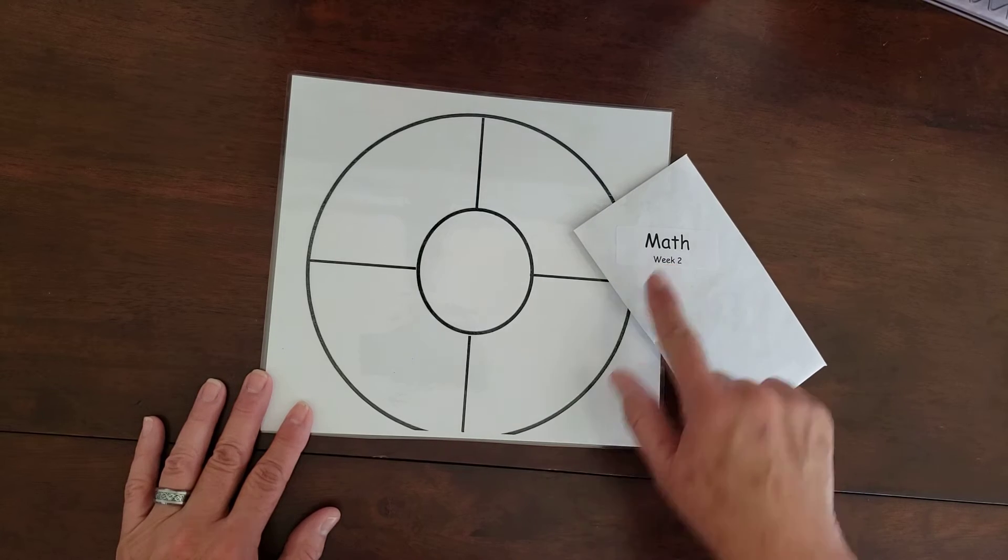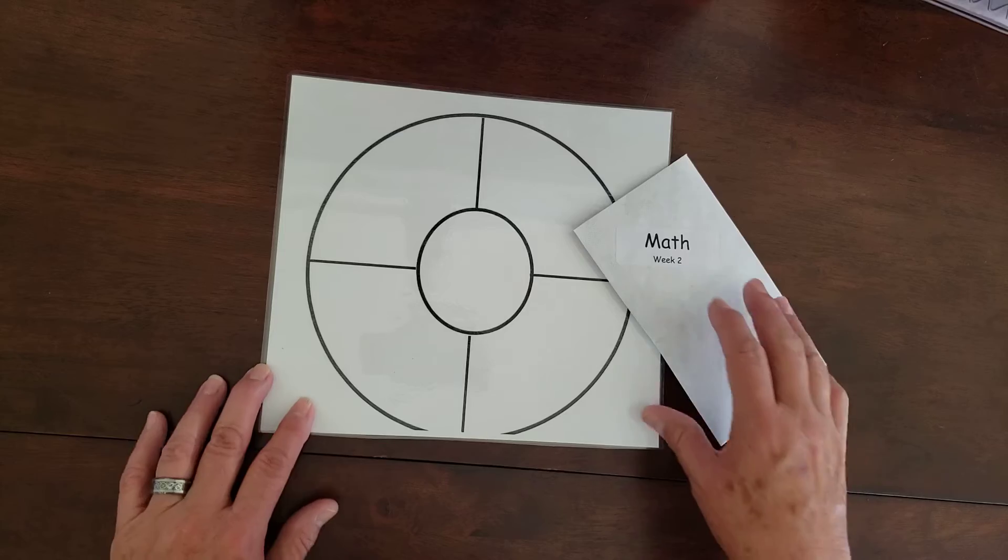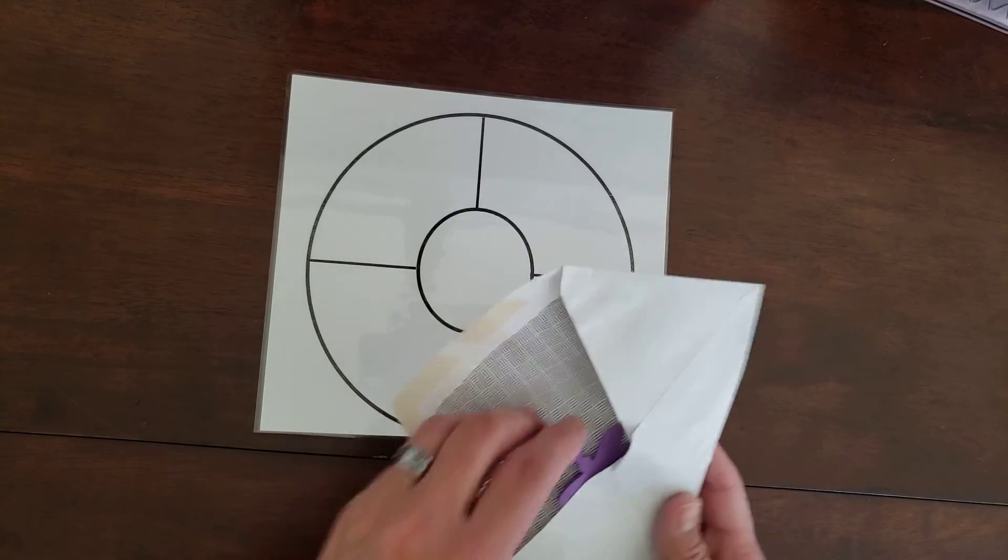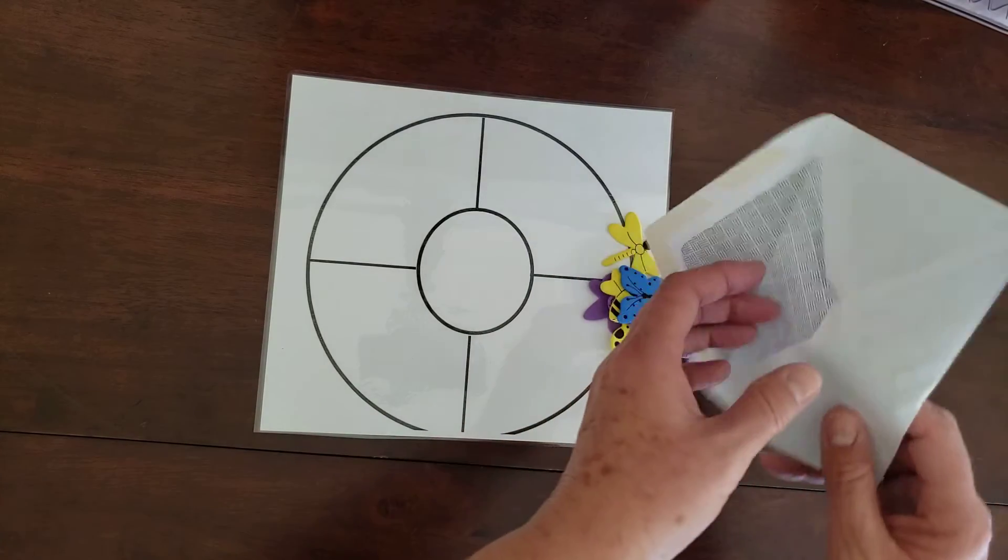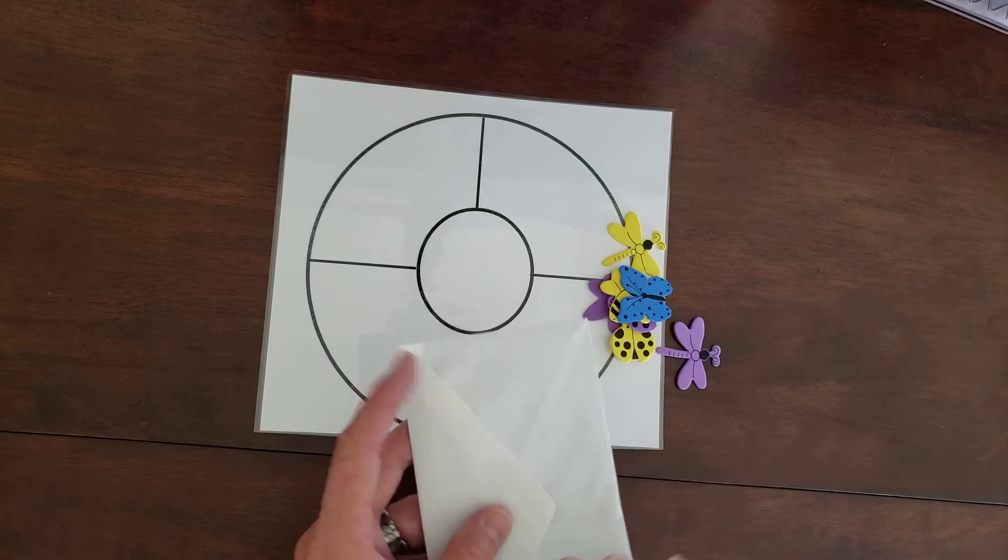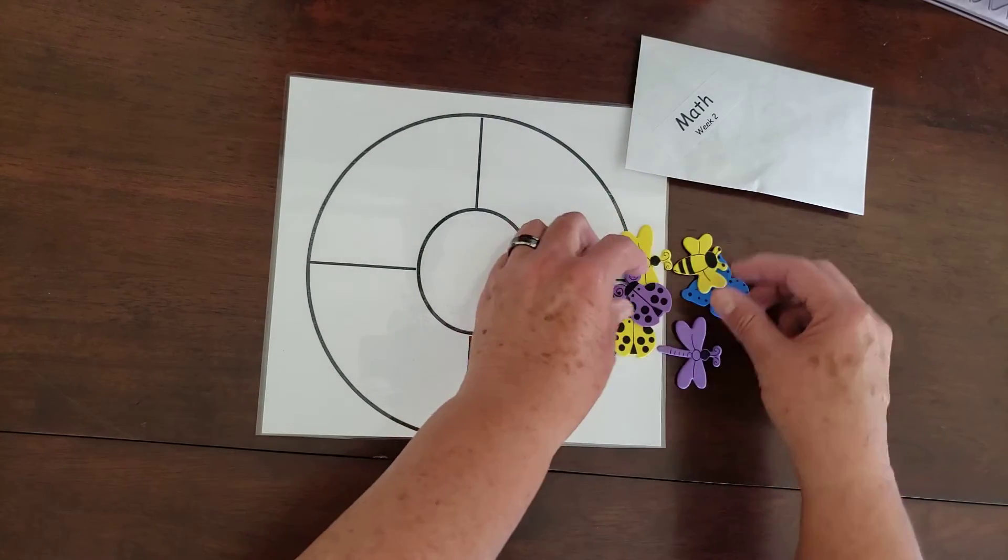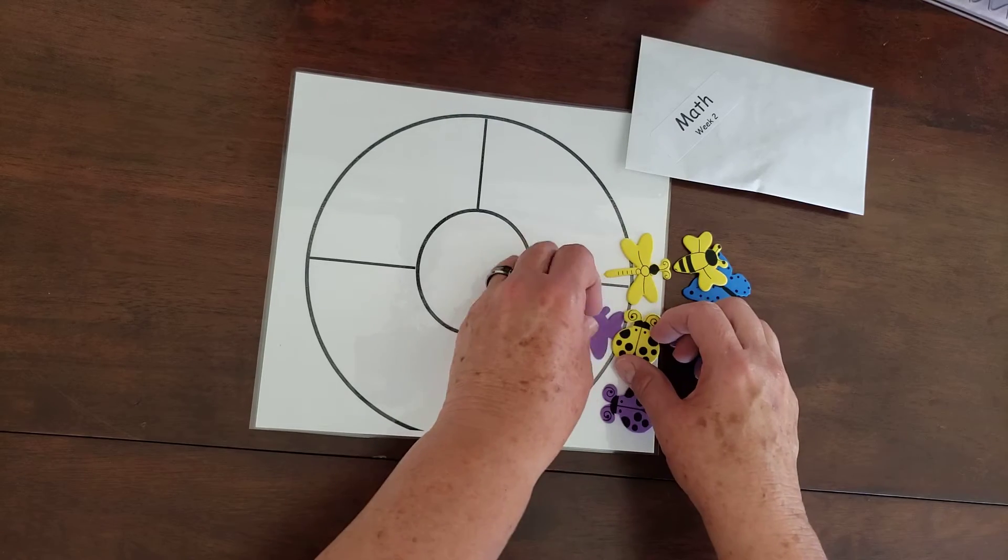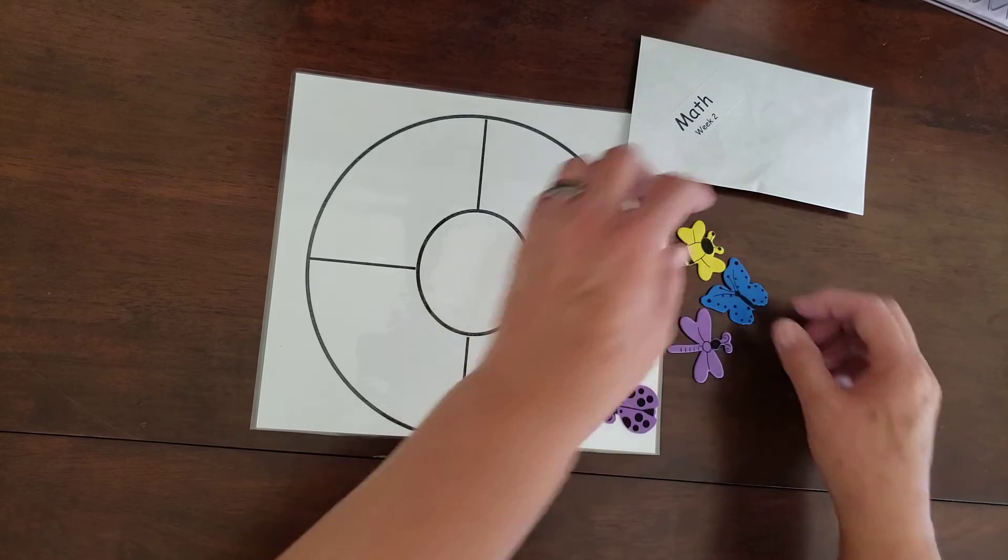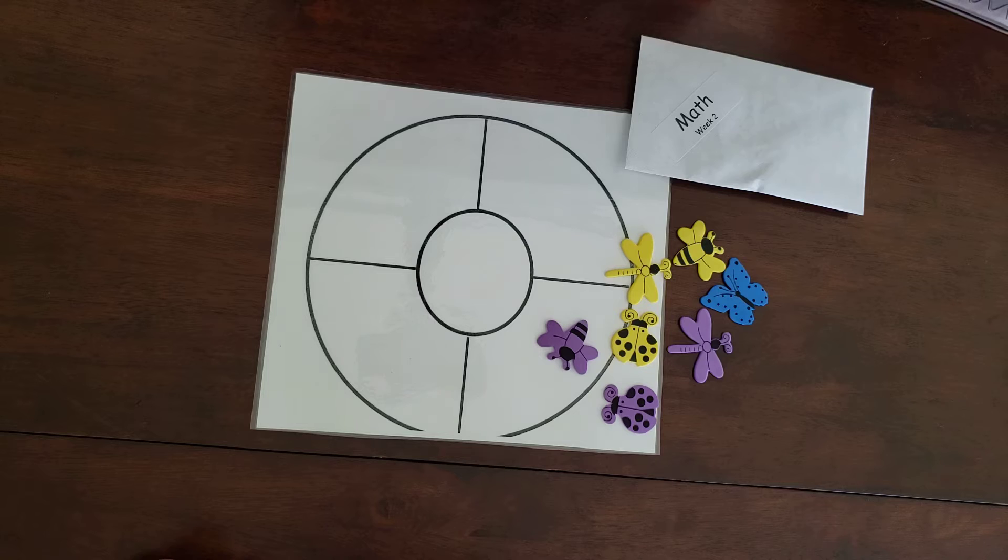This week we have a math envelope there that says week two on it, and inside we have different things to sort. So this time we have all these interesting bugs, and everybody has kind of some different colored ones, but there are more. Last week we only had red and green circles and squares.